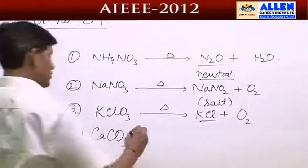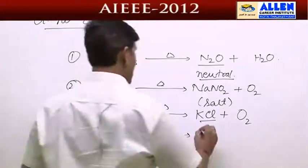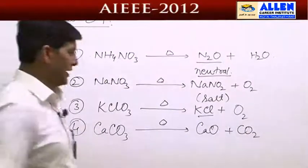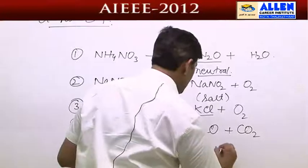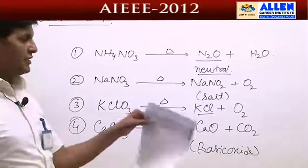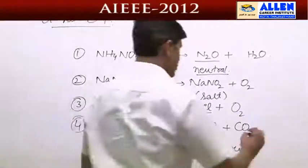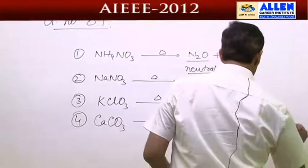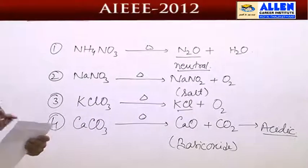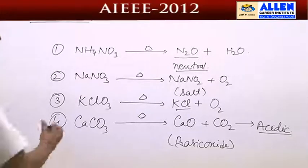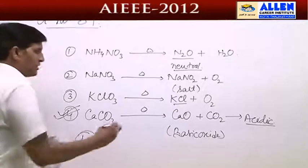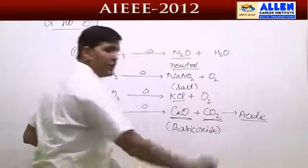The fourth compound is calcium carbonate. It is also an oxy salt and on heating produces calcium oxide plus CO2. Calcium oxide is a basic oxide because it is a metallic oxide. CO2 is an acidic oxide since it is a non-metallic oxide. Considering all four options, the one producing both a basic and an acidic oxide is option 4 — the correct answer.